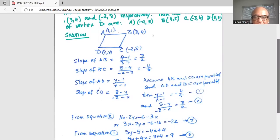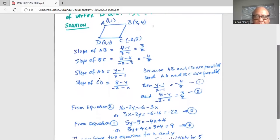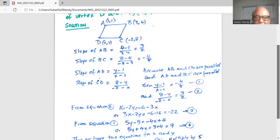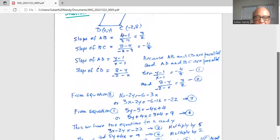So we have two equations from the two slopes. And then we do cross multiplication to get, from equation 2, we do the cross multiplication. We get 16-2y is equal to -6-3x or 3x minus 2y is -6 minus 16 is -22. Similarly from equation 1, we get 5y-5 is equal to -4x+4. Hence 5y+4x is 5+4, which is 9.